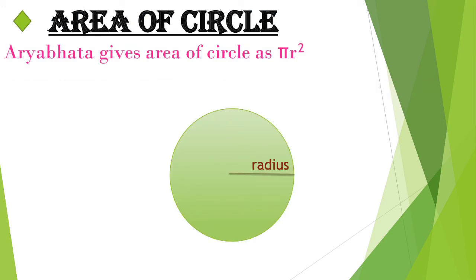Area of Circle: Aryabhata gave the area of a circle. He said: half of the circumference multiplied by the semi-diameter (that is, the radius) certainly gives the area of a circle. The area of a circle equals half into 2πr into r, which gives πr².